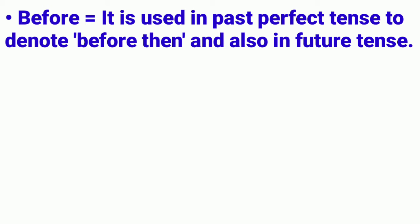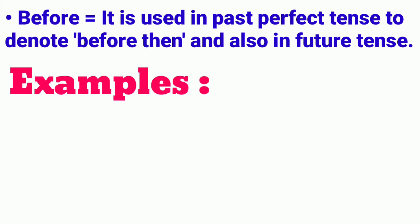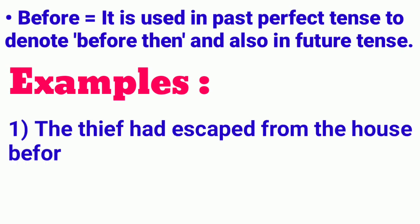Now, here is the preposition before. It is used in past perfect tense to denote before then, and also in future tense. So you can use the preposition before in past perfect tense and in future tense. Let's check the examples.